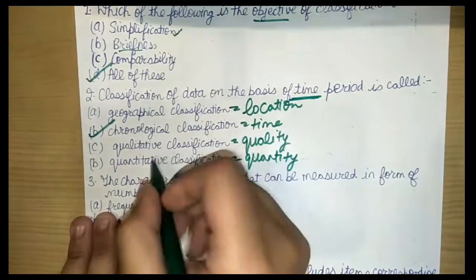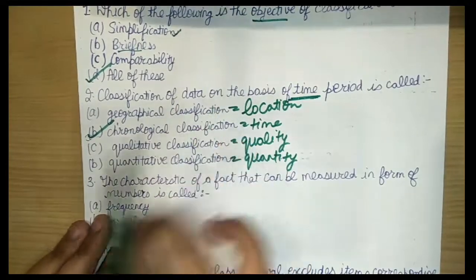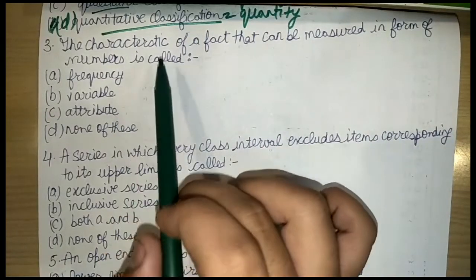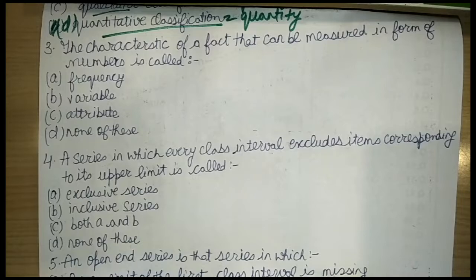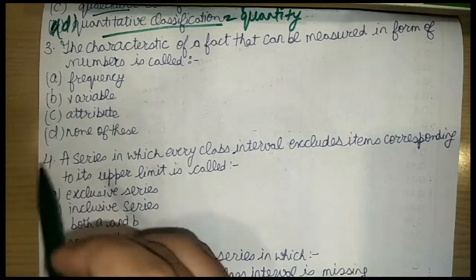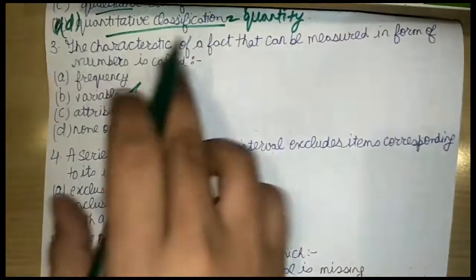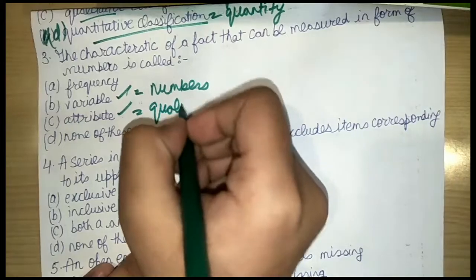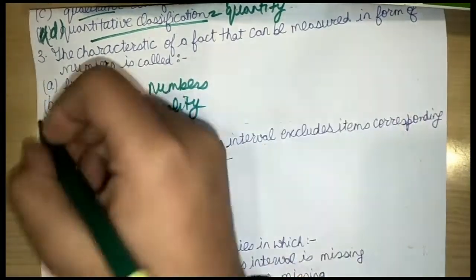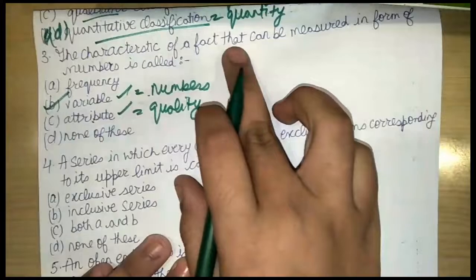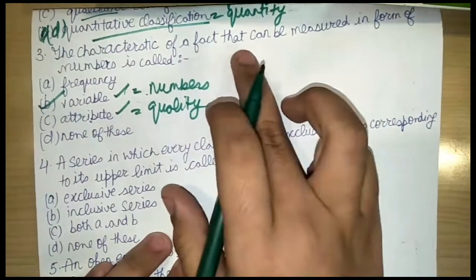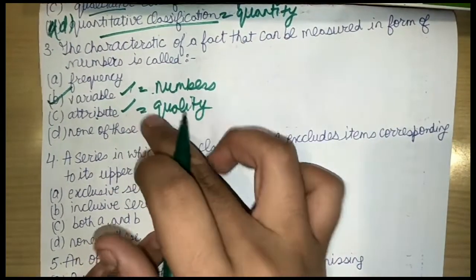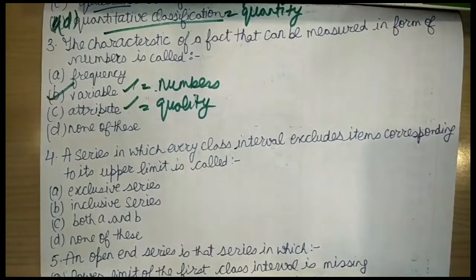The next question is: what is the characteristic of a fact that can be measured in the form of numbers? Frequency is not the answer. Variable and attribute are both characteristics — variable is measured in numbers, while attribute is based on quality. Since the question asks about a characteristic measured in the form of numbers, the answer is variable. Option B is correct.